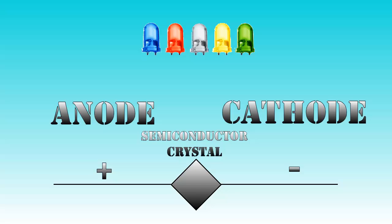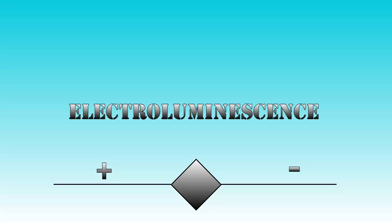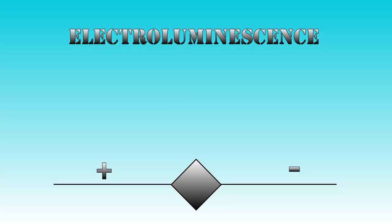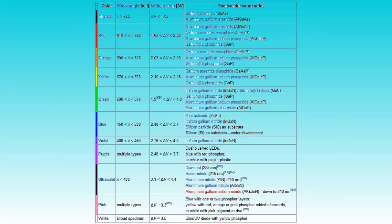The semiconductor crystal is what it's all about. LEDs work on the principle of electroluminescence, which is the ability of some materials to emit light when an electric current flows through them. Different semiconductor materials give different colors of course.